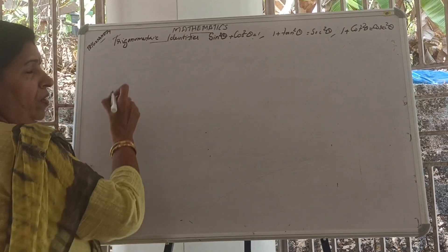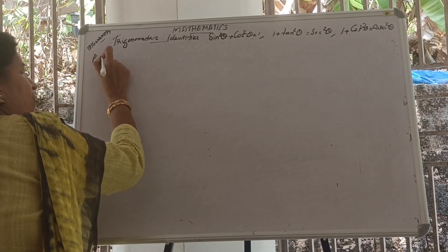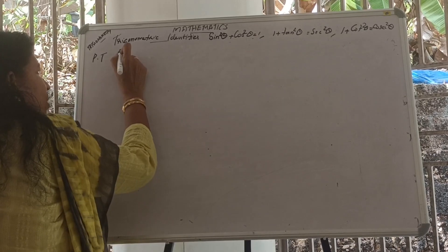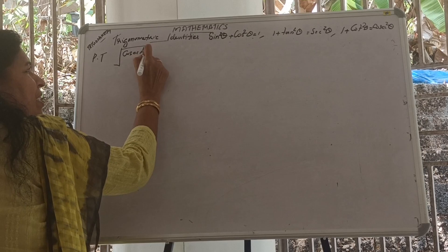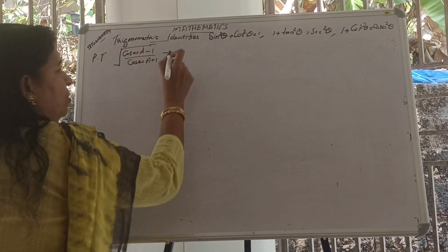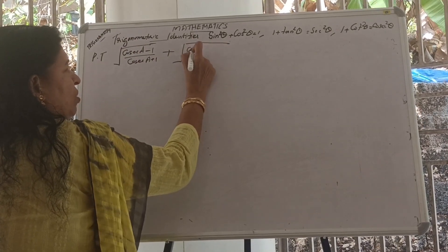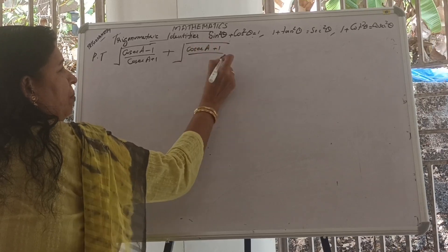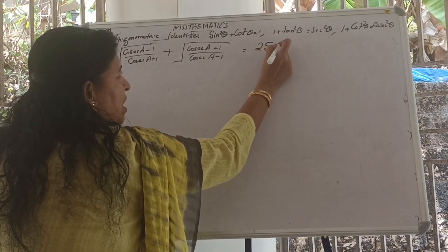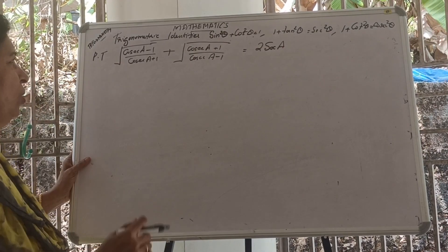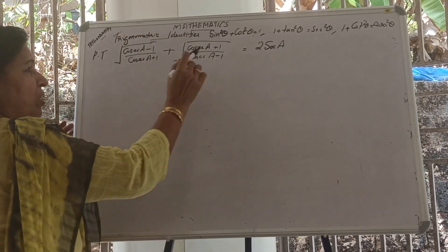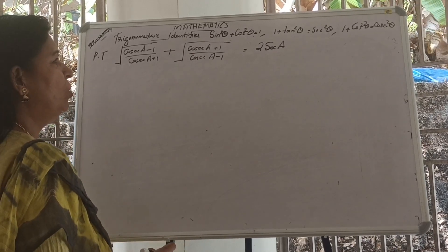Then we have to solve the trigonometric problem. Prove that the square root of (cosec A minus 1) by (cosec A plus 1) plus the square root of (cosec A plus 1) by (cosec A minus 1) equals 2 cosec A.